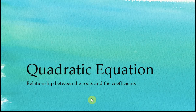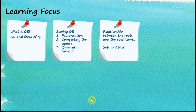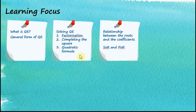Quadratic equation: relationship between the roots and the coefficients. In previous videos we discussed solving quadratic equations by using factorization, completing the square, and the quadratic formula. In this video we are going to discuss the relationship between the roots and the coefficients, expressed in the forms of the sum of roots and the products of roots. Let's begin with a simple example.